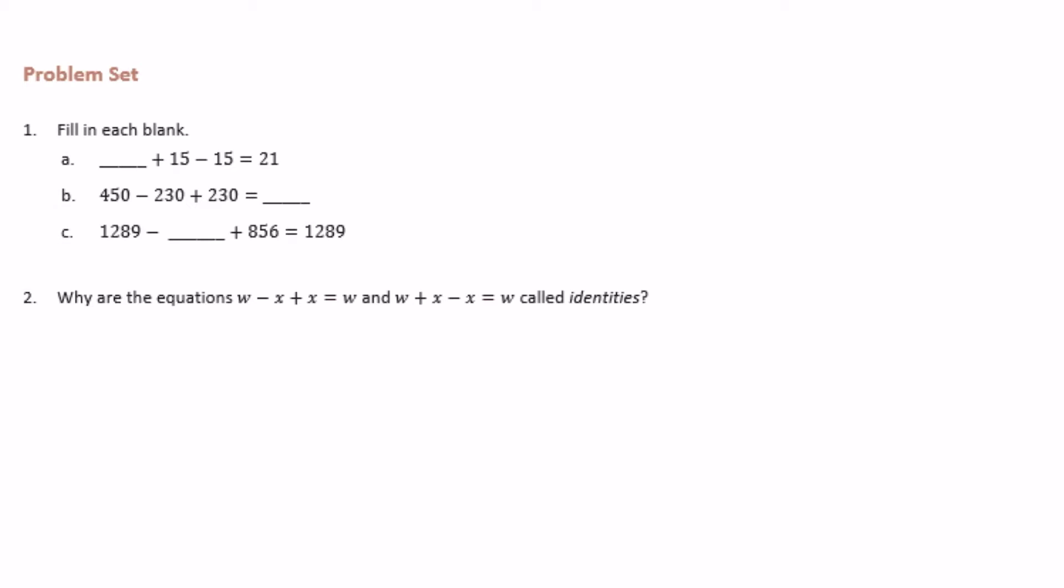Blank plus 15 minus 15 is equal to 21. Remember we learned in the classwork that 15 minus 15 is going to be equal to zero, so those cancel each other out. So something plus zero is equal to 21, well that would have to be 21.